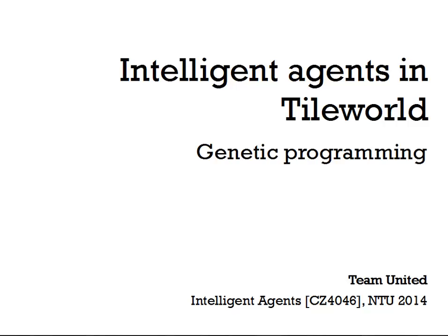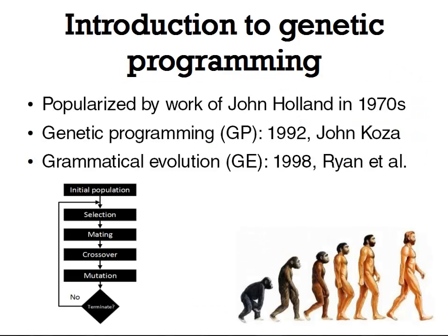We used genetic programming to optimize our agents. Evolutionary algorithms were popularized in artificial intelligence by John Holland in the 70s, and since then it became standard curriculum in any AI course. It is inspired by natural evolution. Initially, we randomly generate a population, select individuals based on their fitness, and mix them together. Some of the offspring are mutated to guarantee variability in our population. This is then repeated until we obtain good results.